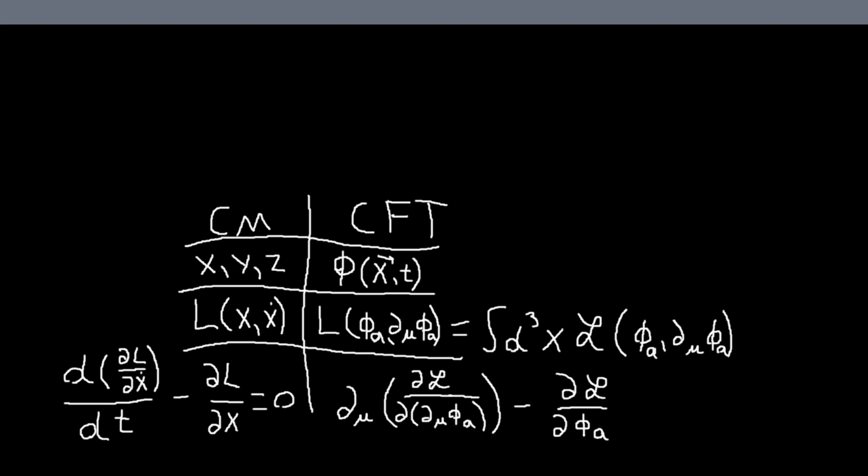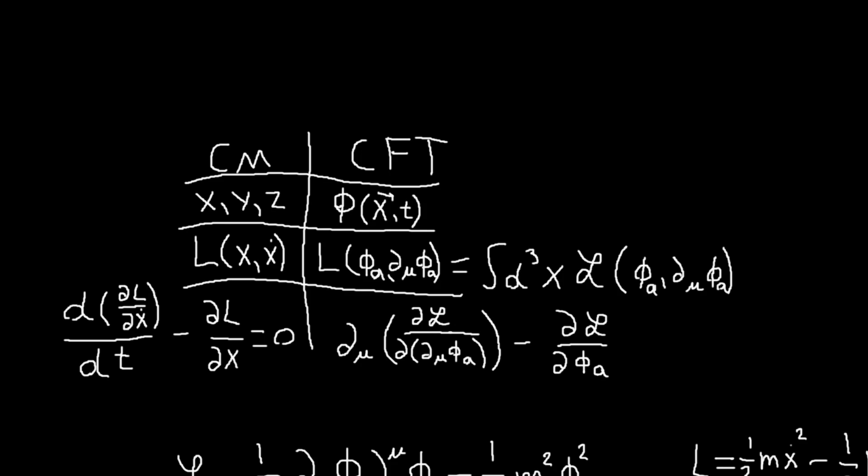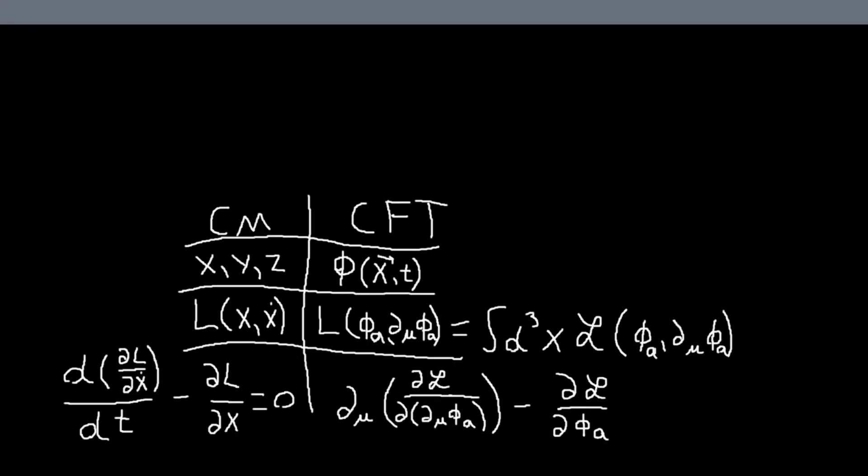So here I've just compiled the main comparisons between the two. Instead of coordinates we're working with fields, instead of a Lagrangian that depends on the coordinates and its time derivatives, we have a Lagrangian that is an integral over a Lagrangian density. Normally we just call this the Lagrangian density the Lagrangian, because that is what enters in the Euler-Lagrange equations. So you really just care about this. If you want more details, David Tong's lecture notes or any other source is a better place to learn about that. But I just care about doing some examples.